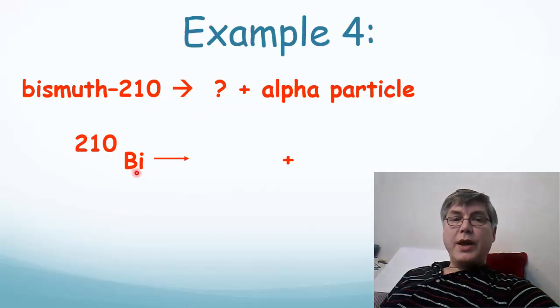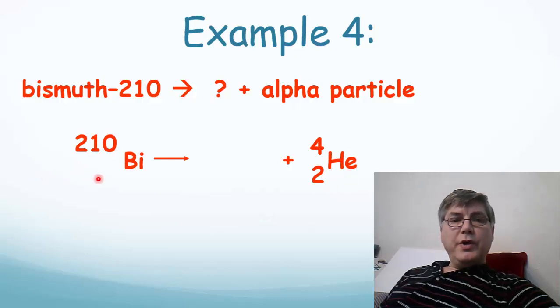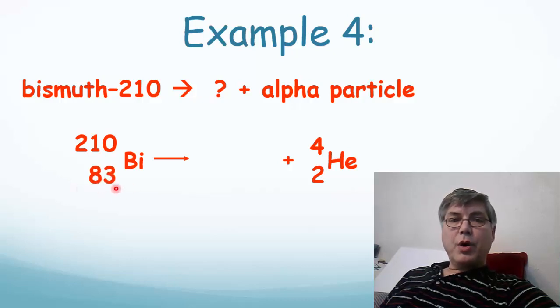So we start with writing bismuth-210 and let's put our alpha particle over here. There we go. It's got a mass number of 4 and an atomic number of 2, and it's just a helium nucleus. We need to know the atomic number of bismuth, so we look it up on our periodic table, or example 3, and we see that it has an atomic number of 83.